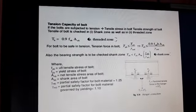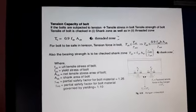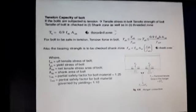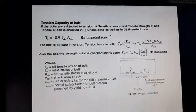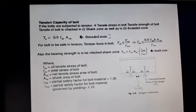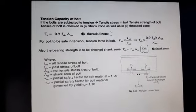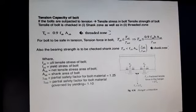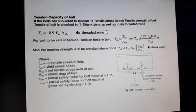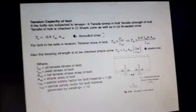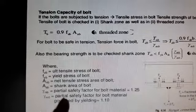For the tension capacity of the bolt, there are three types of failure. For the bolt to be safe in tension, the tension force Tb must satisfy: Tb ≥ Tnb / γmb. The formula is: Tnb = 0.9 × fub × Anb / γmb, where fub is the ultimate tensile strength of the bolt.